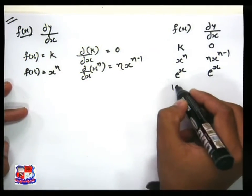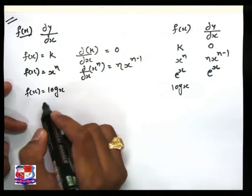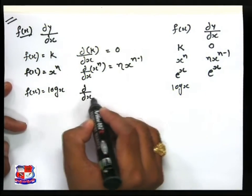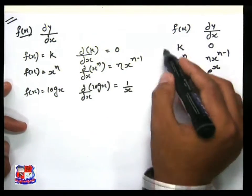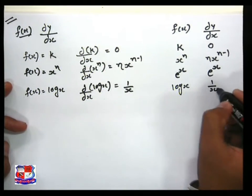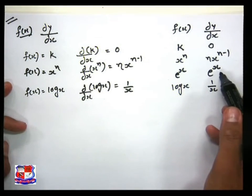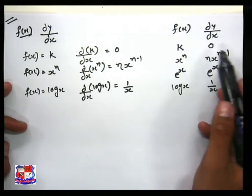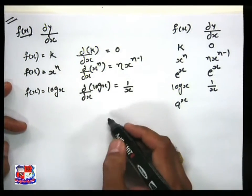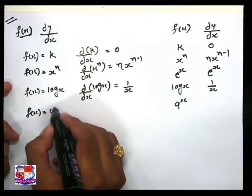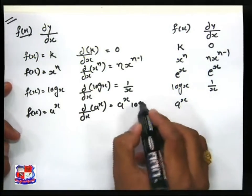Now next, suppose log x — if f of x equals log x, then differentiation of log x, that is d by dx of log x, equals 1 upon x. So these are the basic rules: log x differentiates to 1 upon x, e raise to x differentiates to e raise to x, x raise to n differentiates to n x raise to n minus 1, and a constant differentiates to 0. Now a new value: suppose a raise to x. Then differentiation of a raise to x is a raise to x log a.